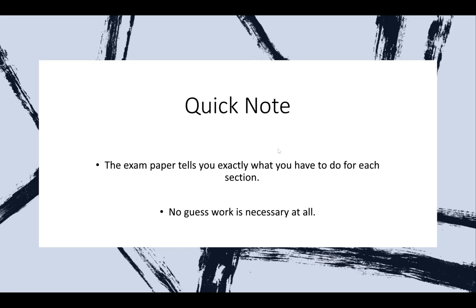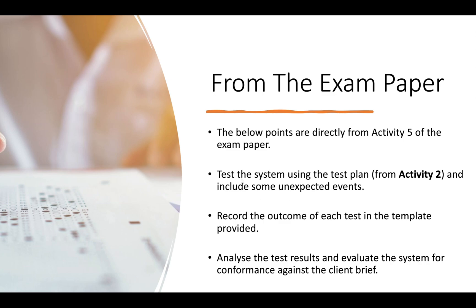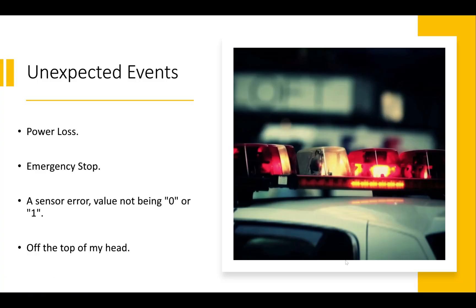A quick note: the exam paper tells you exactly what to do for each section — no guesswork necessary. The last three bullet points were copied directly from the exam paper. It says: test the system using the test plan from Activity 2 and include some unexpected events; record the outcome of each test in the template provided; analyze the test results and evaluate the system for conformance against the client brief. Nothing I'm doing here is something I decided to come up with — it was simply on the exam paper.